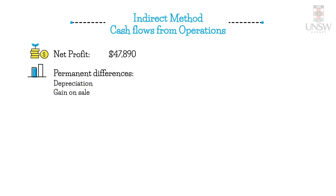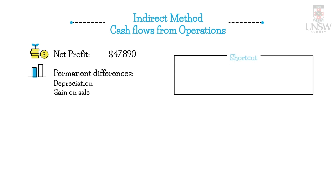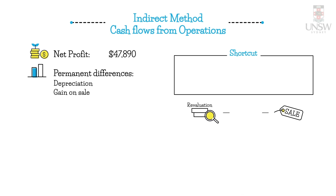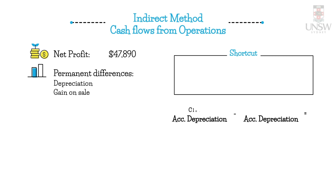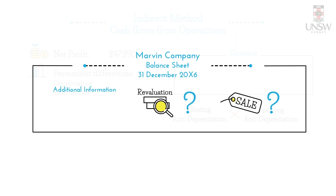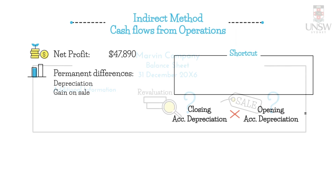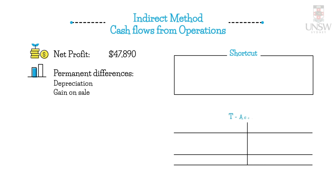There are two methods to calculate depreciation. The first is the shortcut method, which requires that there have been no sales and no revaluations during the period for that non-current asset. That's because sales and revaluations result in a write-down of accumulated depreciation, meaning we can't simply take the difference between closing and opening accumulated depreciation. If there have been sales or revaluations, we must use the long way, which involves reconstructing the T-accounts for accumulated depreciation.